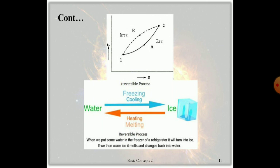A good example involves water: if we extract heat from water — that is, on cooling — it becomes ice. If we then give heat to the ice, it becomes water again. This is one of the best examples of a reversible process. At path A from point 1 to 2, if we extract heat it becomes ice; if we give heat to the ice it becomes water again.